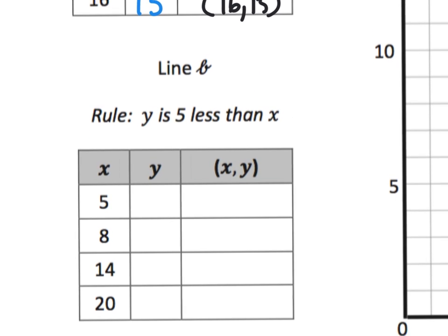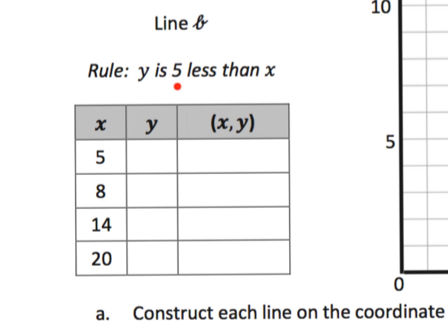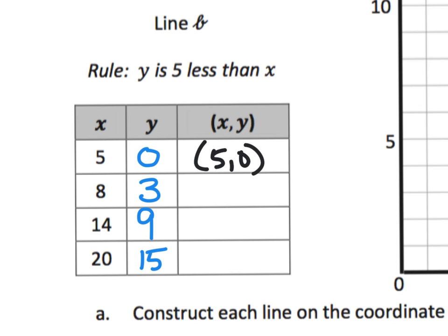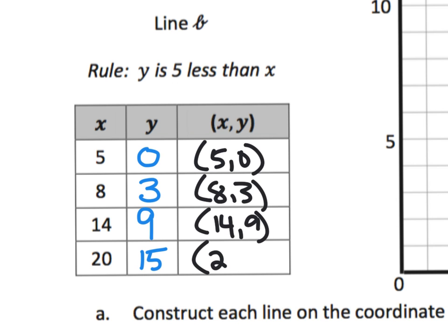Now we do the same thing for Line B, but the new rule is y is five less than x. When x is 5, y is 0; when x is 8, y is 3; when x is 14, y is 9; and when x is 20, y is 15. Our ordered pairs for Line B are (5, 0), (8, 3), (14, 9), and (20, 15).